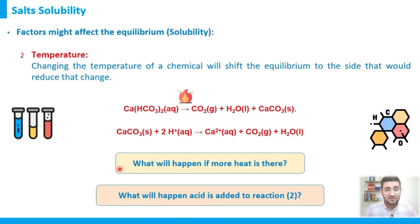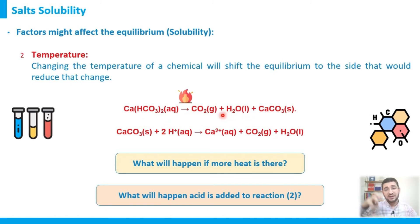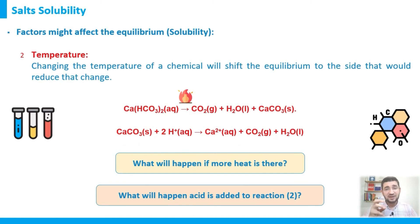To answer the two questions: if more heat is applied to the first reaction, it forms more products (more scale), because the system shifts to reduce the stress. If more acid is added to the second reaction, it dissolves more calcium carbonate scale, releasing calcium ions in soluble form and CO₂ gas — effectively dissolving scale inside pipelines, heat exchangers, or elsewhere.